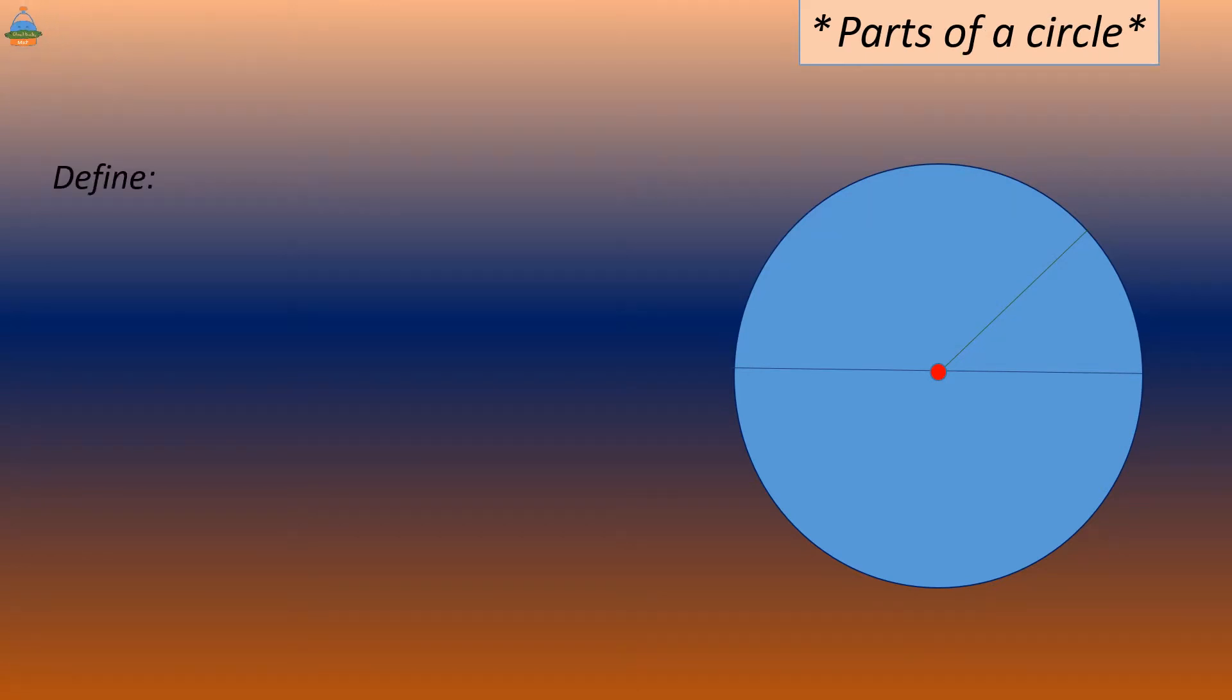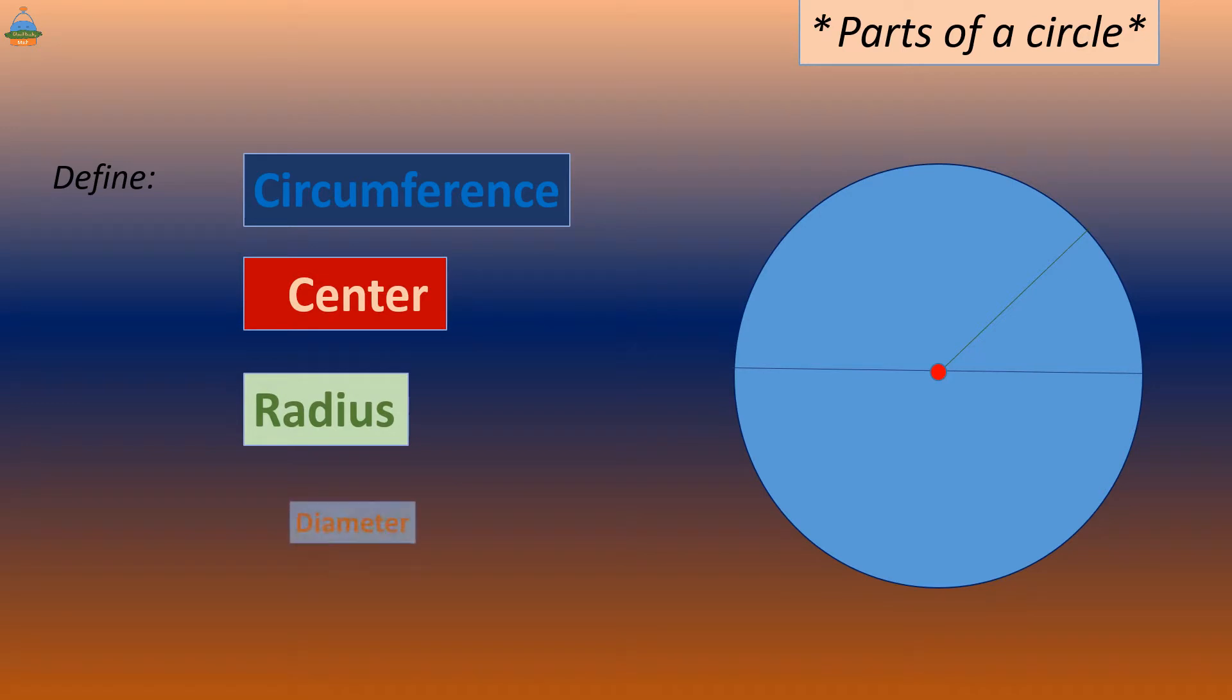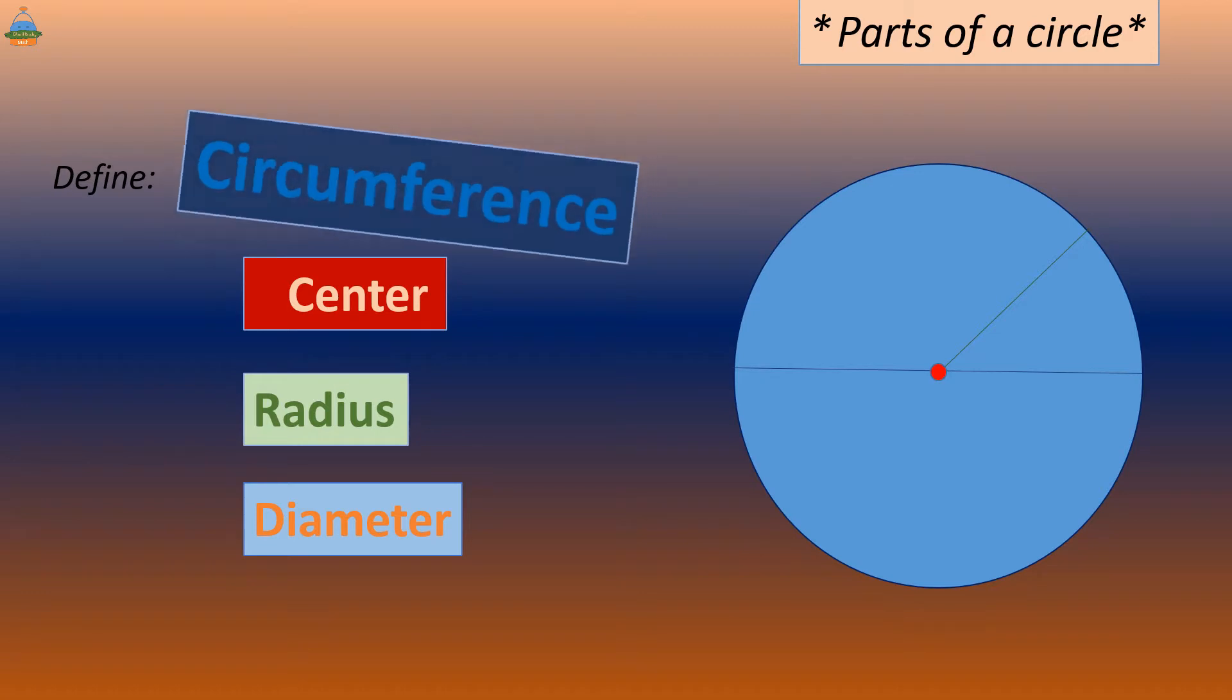Firstly, we'll look at the circumference, center, radius, as well as the diameter. Let's start by looking at the circumference.